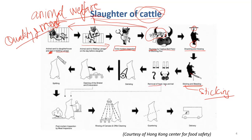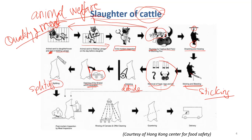The next step is to cut or remove the head, the legs, and the tail. Instead of de-hairing as with pigs, in cattle we do de-hiding — hide means the skin, so de-hiding means to remove the skin. For pigs, we can eat the skin so we just remove the hair, but for cattle we cannot eat the skin so we remove it. Then evisceration: opening the brisket and abdominal area to take out the internal organs. In cattle we also do splitting — cutting the body into halves. The next step is post-mortem inspection to check the quality of the carcasses and see if they are suitable for human food.